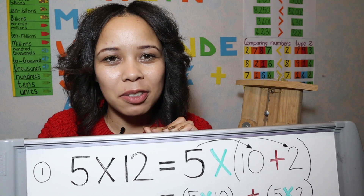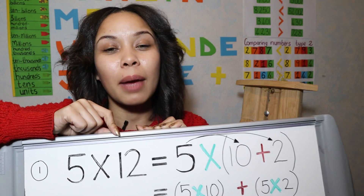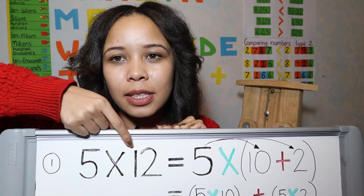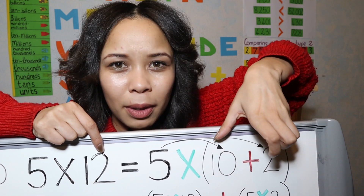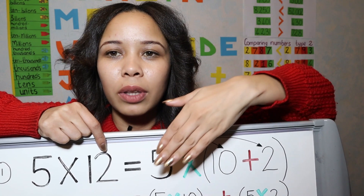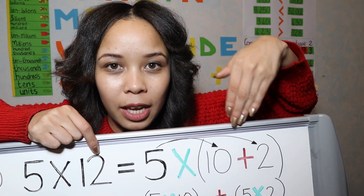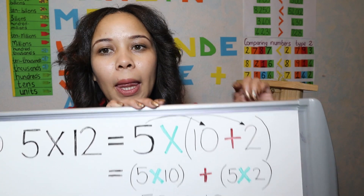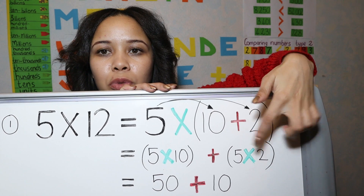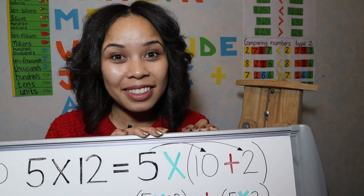Let's look at our first example with numbers. The first sum is five times twelve. I'm going to break up — expand — the twelve: twelve becomes ten plus two. Then I multiply my five with each number inside the bracket: five times ten plus five times two. Five times ten is fifty and five times two is ten, then I add those up and my answer is sixty.